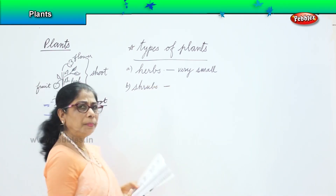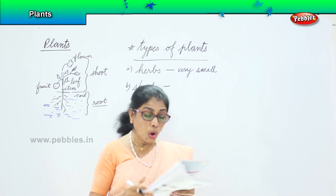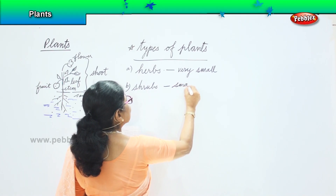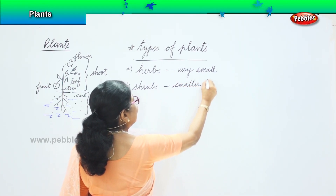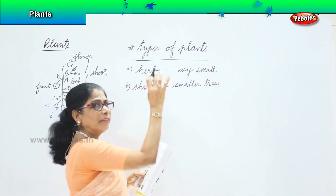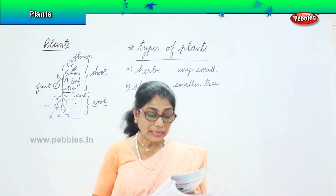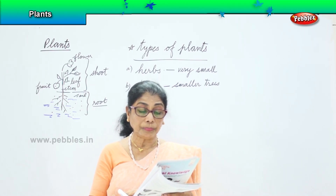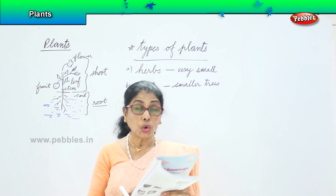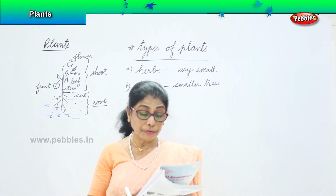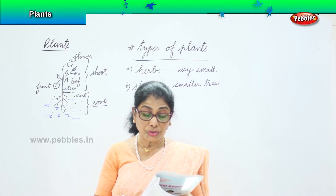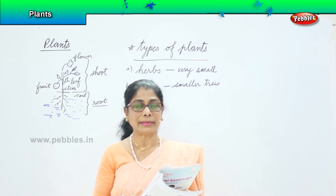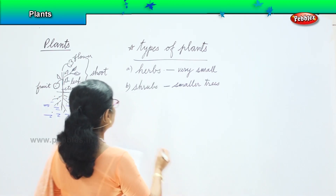The next type is shrubs. Shrubs are smaller than trees — they are smaller plants. They have a short stem and lower height, and they live for a few years. Some shrubs contain flowers, like the sunflower and rose plant.